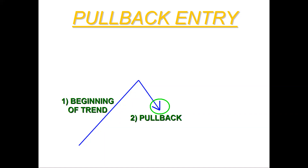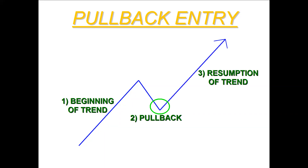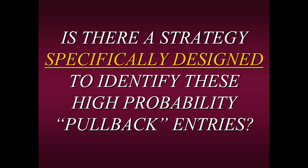Phase two is where you want to buy at the lows or near the lows of a pullback sell-off. Remember, a pullback in an overall uptrend is just a small sell-off or drop in price before phase three happens — the resumption of trend. So you're waiting to buy in the pullback, but that's easier said than done. How do we know if it's pulling back or just going lower? That brings us back to the question: is there a strategy specifically designed to identify these high probability pullback entries?